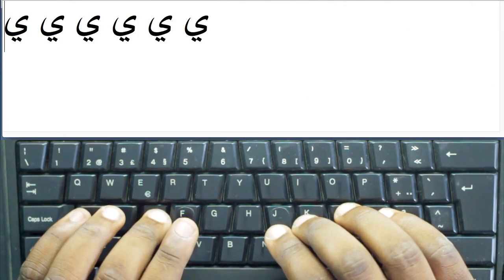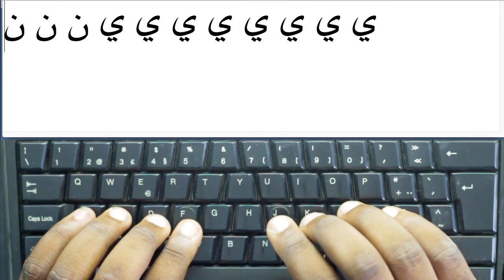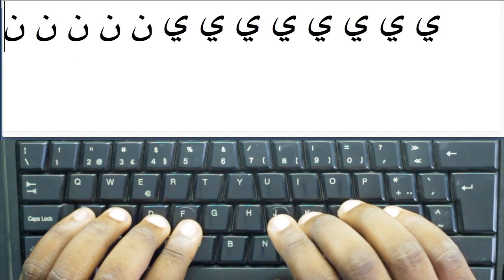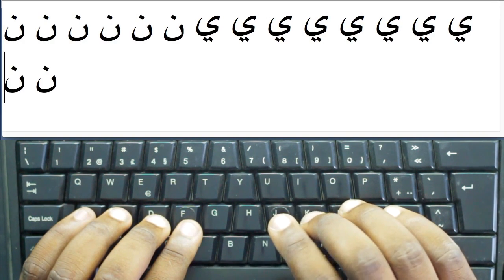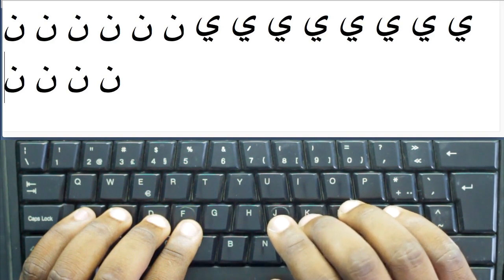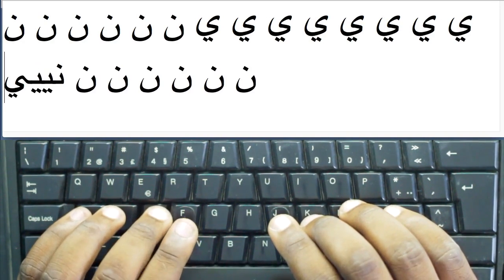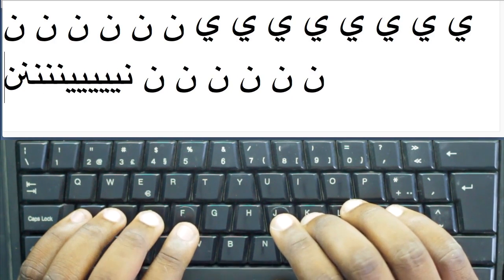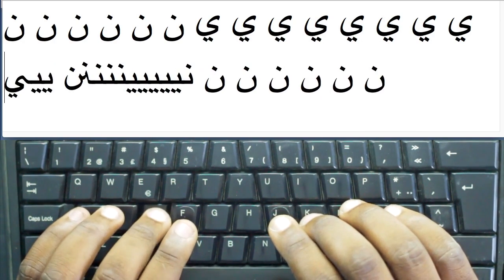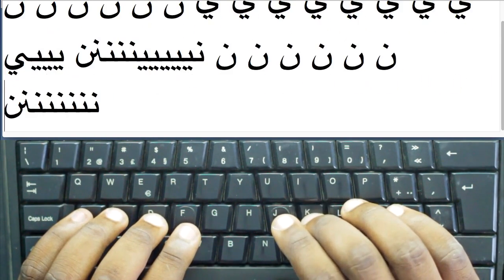In the second lesson, you learn how to type two more letters, and you do exercises covering all the four letters you have studied. In the third lesson, you learn two more, and you do exercises that cover all the six letters you have studied, and so on.